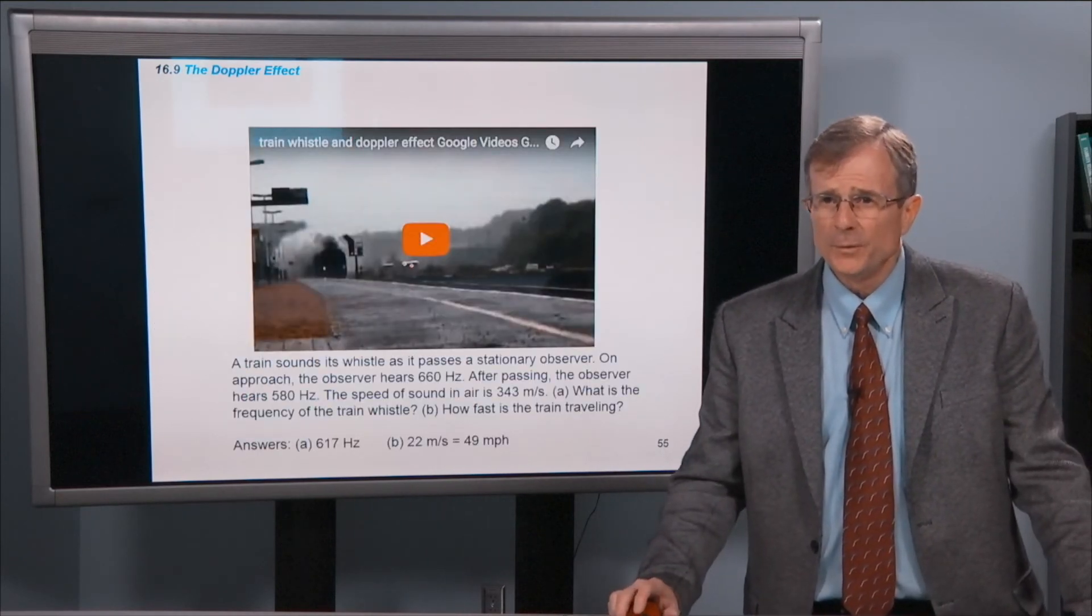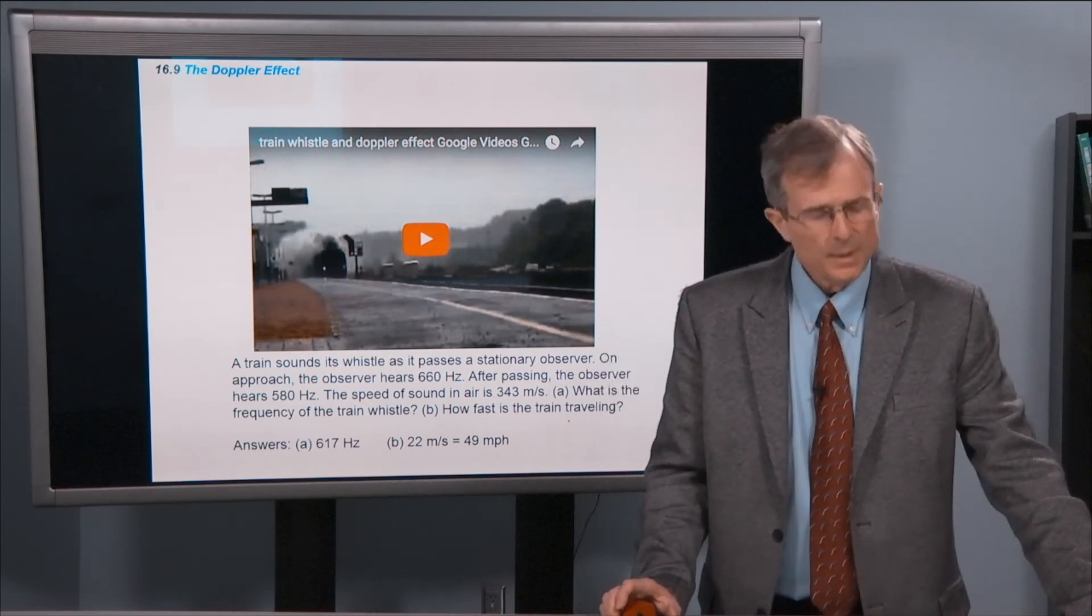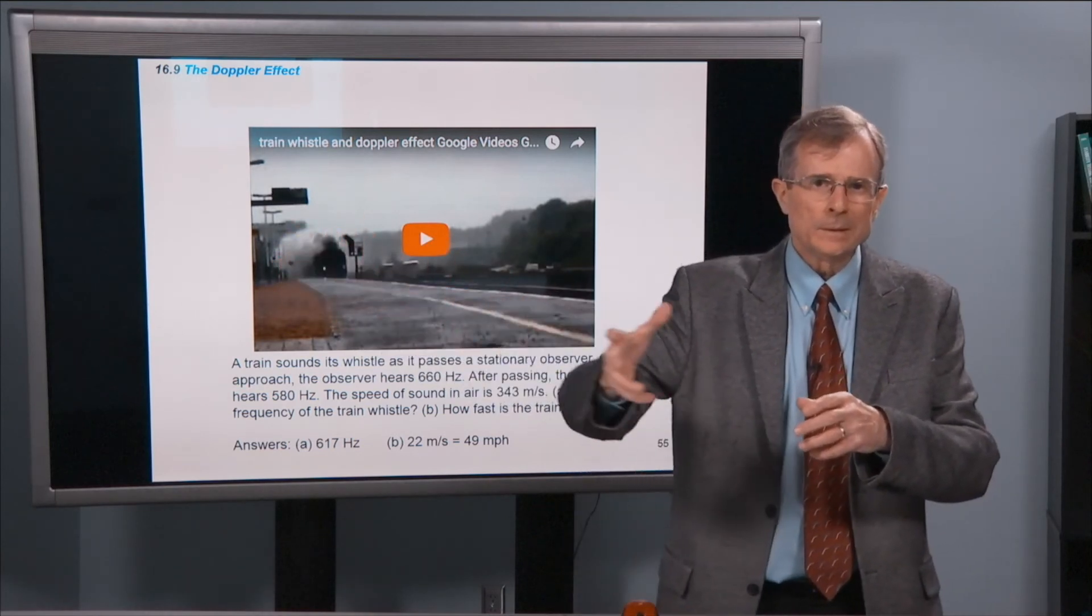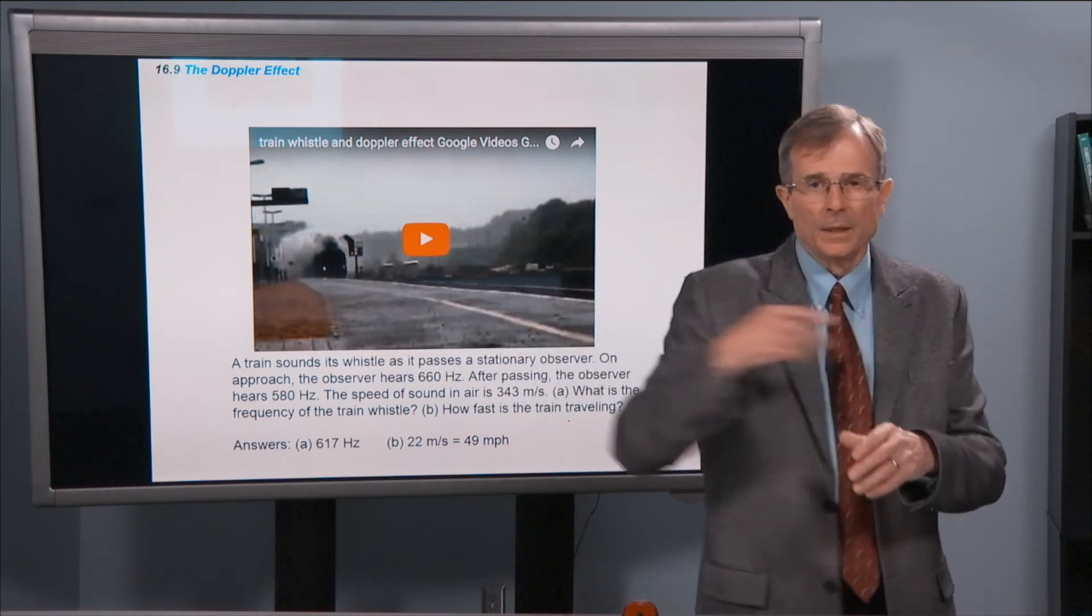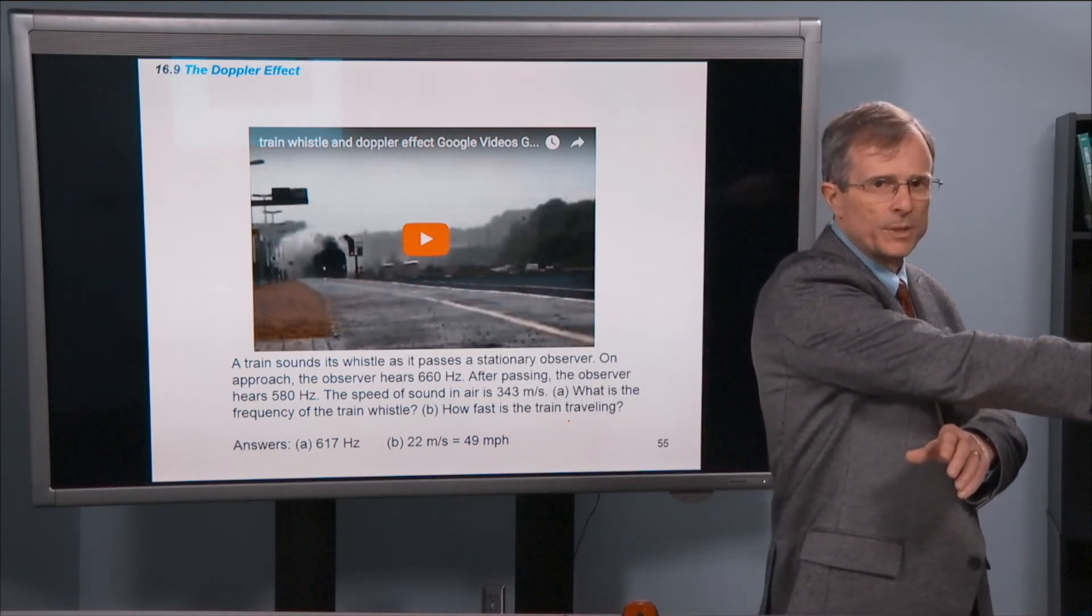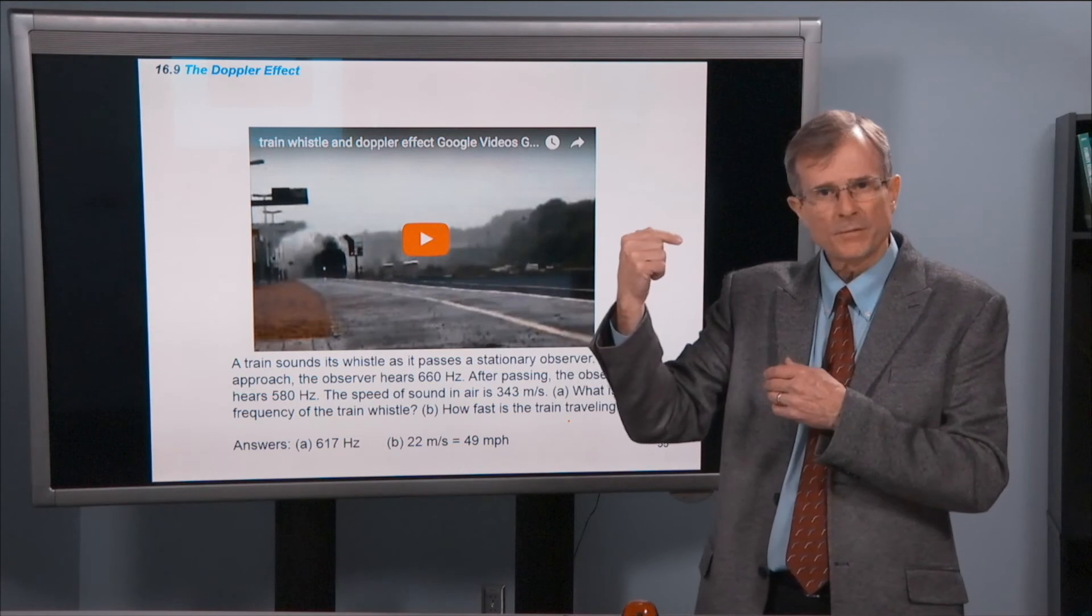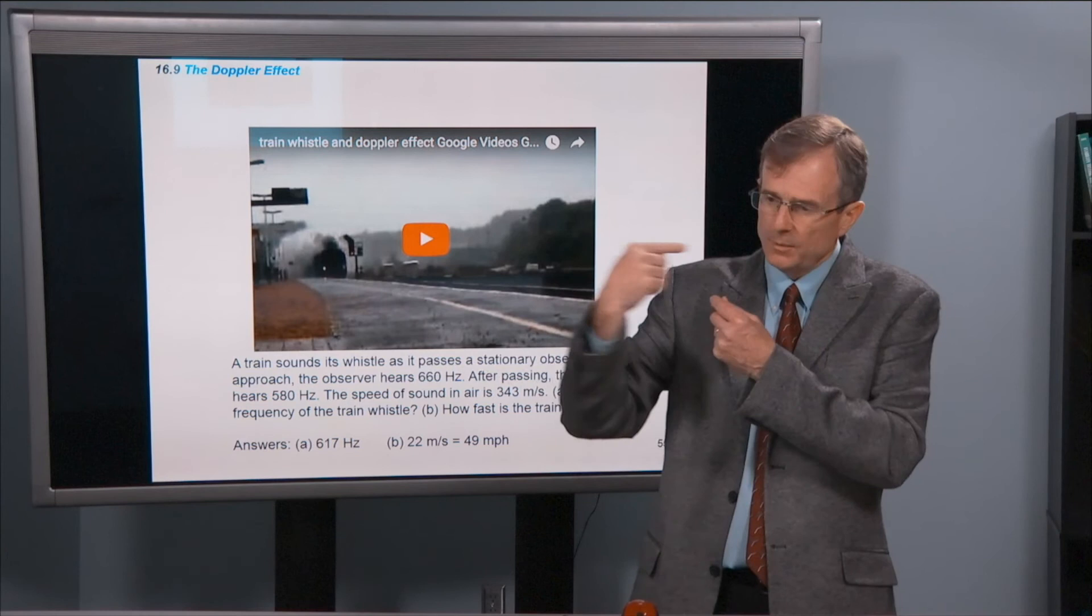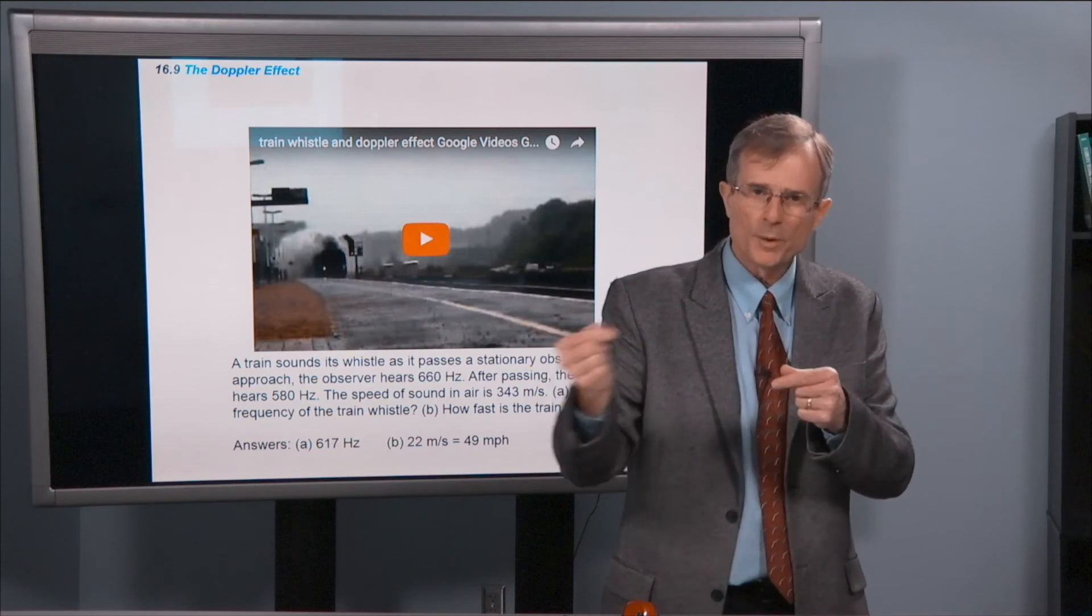You've all seen this phenomenon, but now you're going to understand it a little bit better. When a train or truck approaches and you're on the side of the road, you hear a certain pitch. And then while it's passing you, it changes. And then it keeps the same pitch going away. The reason is that on approach, you have the higher frequency that you detect. And when it's going away, you have a lower frequency. And it's only this short amount of time where it's right beside you where it's going from high to low.